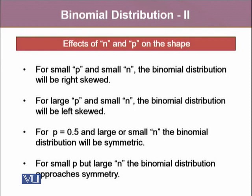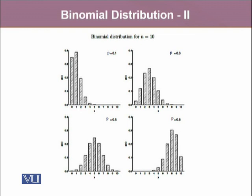There is some specific effect of N and P on the shape of the distribution. For small p and small n, the binomial distribution will be right skewed. For large p and small n, the binomial distribution will be left skewed. But if p is 0.5, then whatever the n value is, either large or small, the binomial distribution will always be symmetric. Whereas for small p but large n, the binomial distribution approaches symmetry. So when p is 0.1, it shows a positive skew; 0.3, it shows kind of symmetry but still a positive skew; 0.5, it is symmetric; and 0.8, it is negatively skewed.